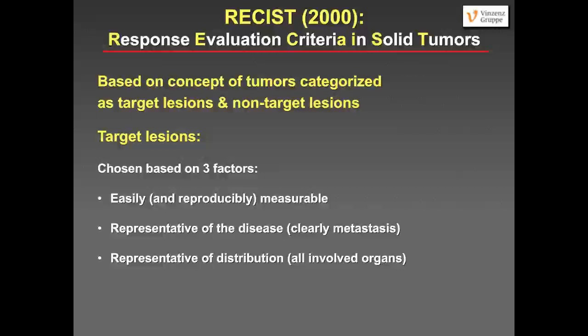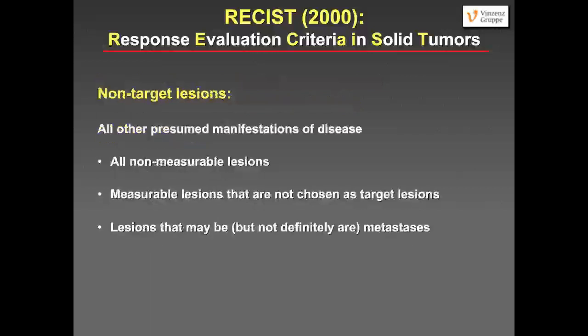Target lesions are chosen based on three factors: they have to be measurable, easily and reproducibly measurable, and representative of the disease — so clearly they should be metastases. These target lesions should also be representative of the distribution of disease, so you should measure lesions in almost all involved organs. Non-target lesions are all other presumed manifestations of disease — all non-measurable lesions, such as peritoneal carcinomatosis. Also measurable lesions not chosen as target lesions.